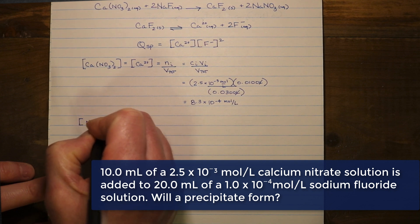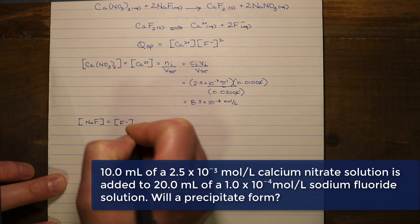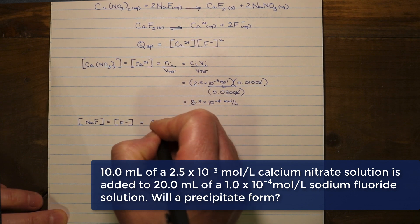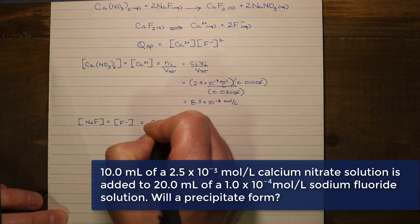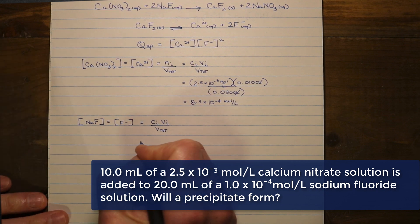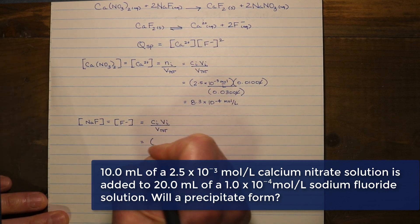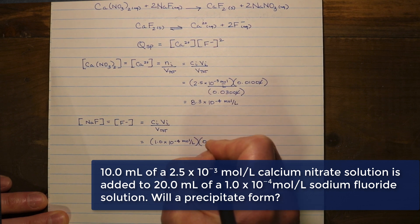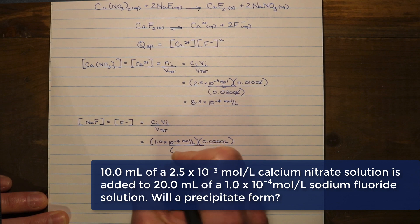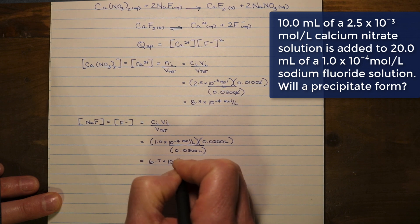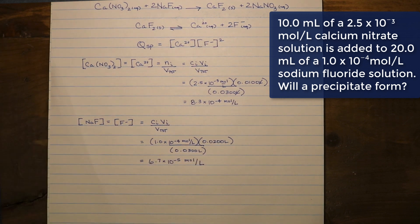The sodium fluoride concentration equals the concentration of the fluoride ions, again due to the 1:1 dissociation ratio — one fluoride ion for every sodium fluoride that dissociates. We calculate this by taking the initial concentration multiplied by the initial volume and dividing by the total volume of the reaction mixture. The initial concentration is 1.0×10⁻⁴ mol/L, multiplied by the initial volume of 20 milliliters, divided by the total volume of 30 milliliters, giving us a fluoride ion concentration of 6.7×10⁻⁵ mol/L.